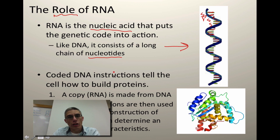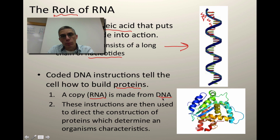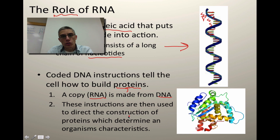The coded instructions are going to tell the cell how to build proteins. You need to understand that there are lots and lots of different types of proteins in our body that are used to build structure and to produce various substances that we need to stay alive. A copy of the RNA is going to be made from that DNA — what we consider a disposable copy of that information. It's disposable because you want to make sure that you protect the information in the DNA; that DNA is going to stay in the nucleus. But we need to be able to send a copy of that information out so we can build those proteins, and these instructions are then used to direct the construction of proteins, which are going to determine the characteristics of that organism.